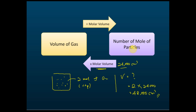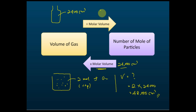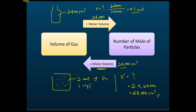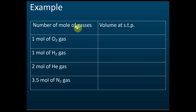If they give you the volume of a gas and want you to find the number of moles, divide the volume by the molar volume. For example, a bottle with a volume of 2,400 cm³ at RTP: divide 2,400 by 24,000 to get 0.1 moles. This works for any type of gas — oxygen, hydrogen, or carbon dioxide — as long as you know the volume and the temperature and pressure.